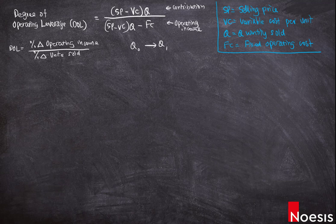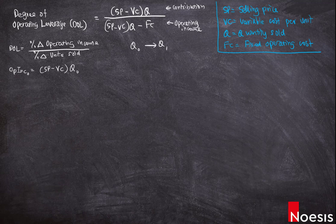To calculate operating income, the initial operating income will be based on the selling price minus the variable cost per unit — this is our contribution margin — multiplied by Q₀. This is the total contribution, and then minus the fixed operating costs.